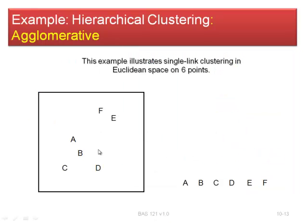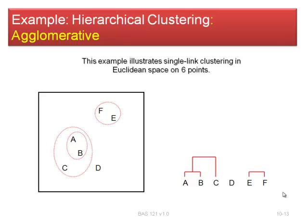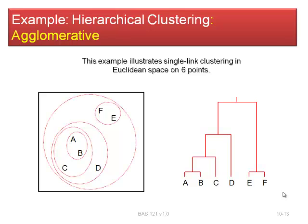Here's an example. We ask: what's the first group that looks closest together? A and B look very close, so we draw a circle around them and mark them as a cluster. The next cluster might be E and F — we draw them with a height indicator. The farther away they are, the higher the height will be. Then A, B, and C become a cluster. Then D joins A, B, and C. Finally we've got one cluster.